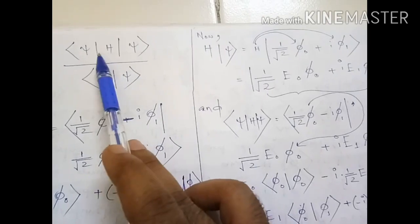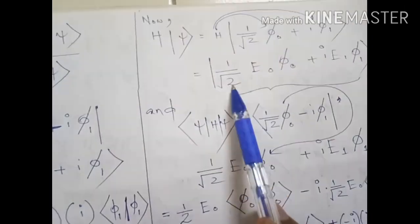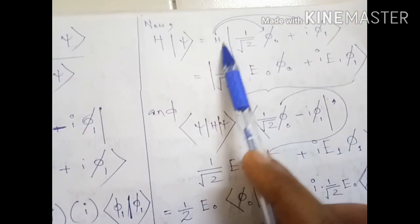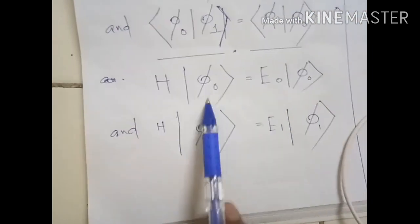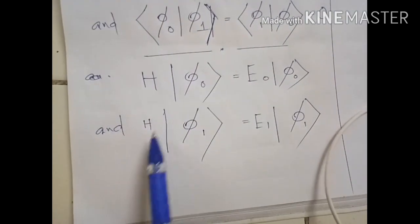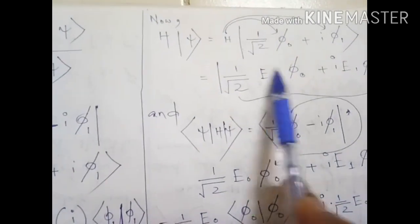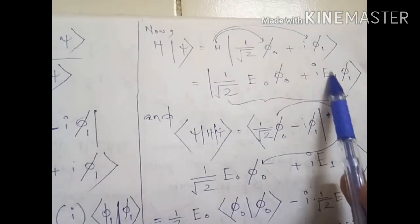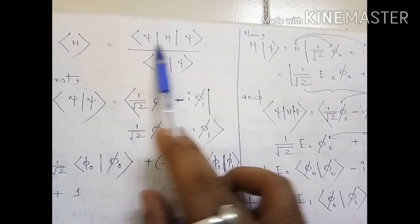For convenience, let us now operate the Hamiltonian on ψ. When we operate H on φ₀ we get the ground state energy E₀, and when H operates on φ₁ we get the first excited state energy E₁. So H|ψ⟩ = (1/√2)(E₀φ₀ + iE₁φ₁).